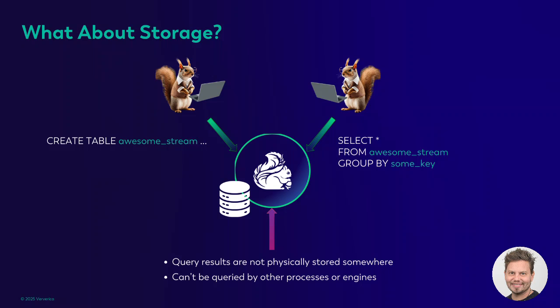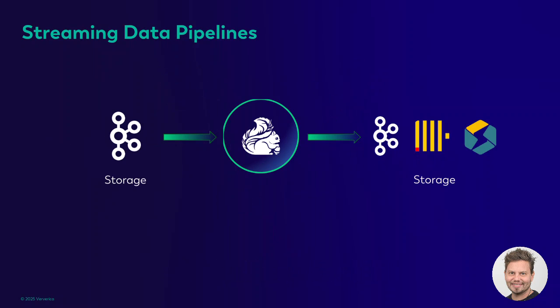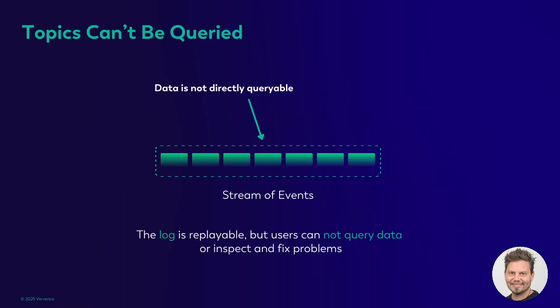The problem, though, is that unlike a database, Flink misses storage. These tables and query results are not physically stored somewhere and cannot be queried by other processes or engines. Typically, when building streaming-first architectures, we had to stitch multiple systems together — consuming and writing events back and forth in Kafka, or integrating with OLAP systems like ClickHouse or StarRocks to run queries on fresh data. This also resulted in duplicating storage, since Kafka cannot be queried directly.